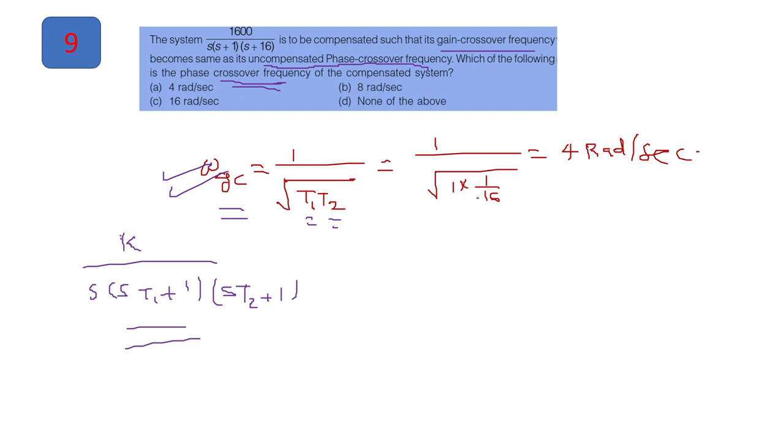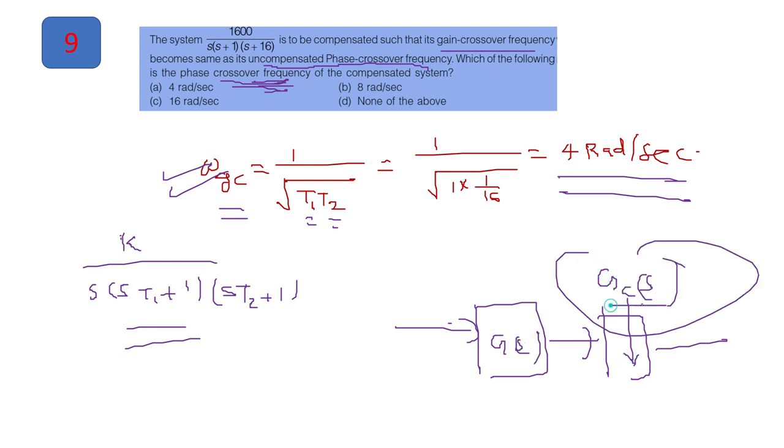However, from the given data, you cannot obtain the phase crossover frequency because there is no detail of the compensating block. Suppose this is our G(s) and we are connecting this block as a compensator. So no information is given. So you cannot determine using the given data. So this will be the answer for this question.